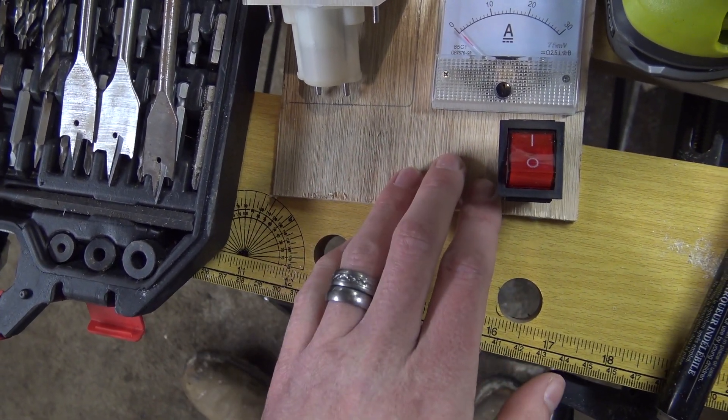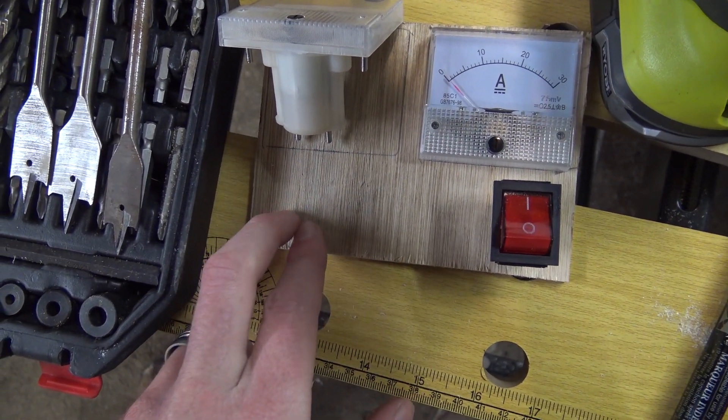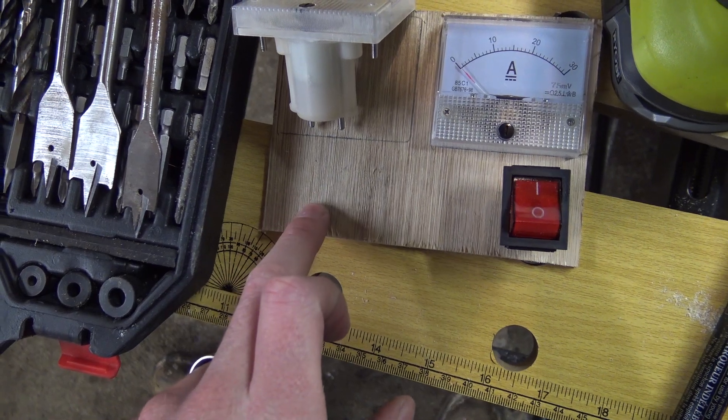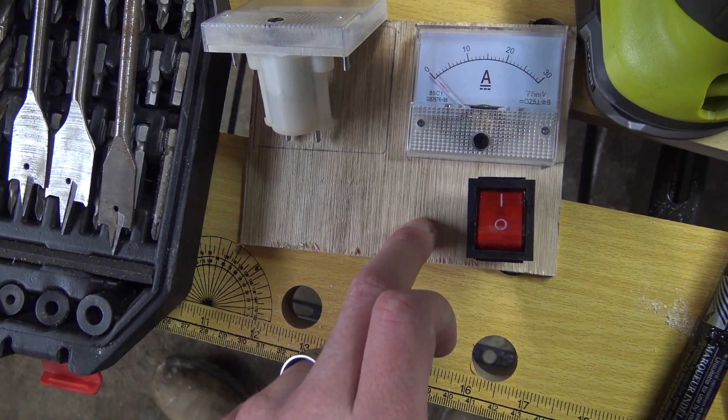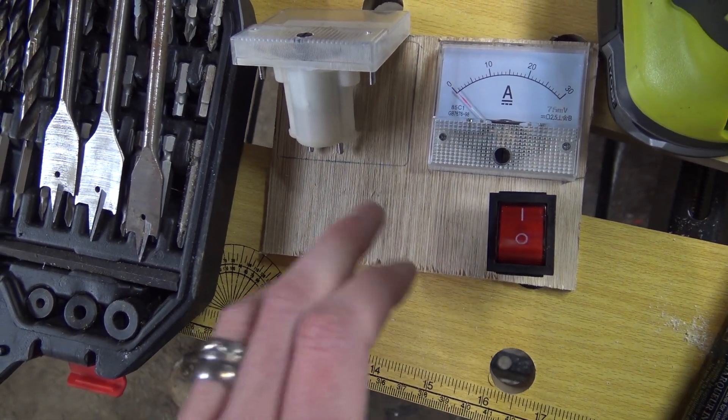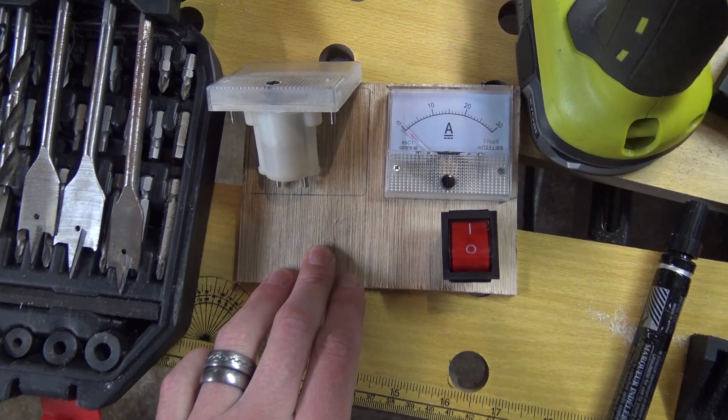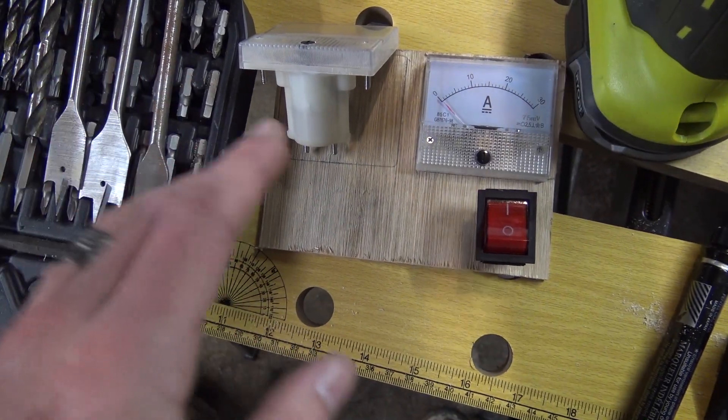And then here is gonna be me terminals coming off. I'm gonna have three positive, three negative. Haven't yet decided if I want the negative and the positive on different sides or if I want positive with its negative, positive with its negative, positive with its negative. I could have positive, positive, positive, negative, negative, negative. Don't know how I'm gonna do that yet.